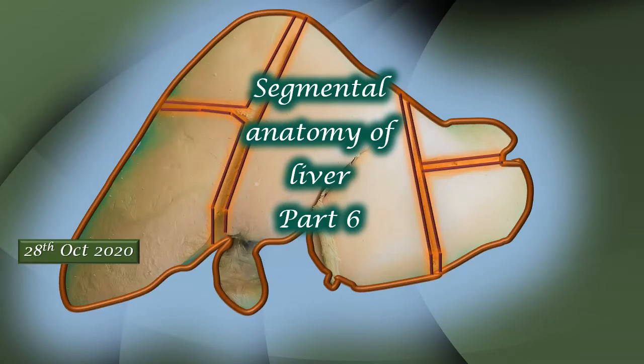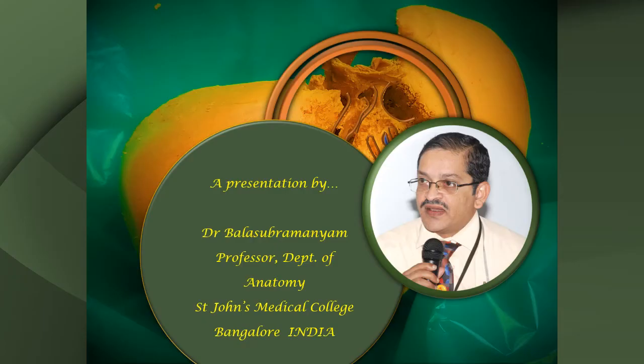Dear friends, welcome to this edition of VBS Anatomia. We are in Part 6 of the series on segmental anatomy of the liver. In this video, we will be covering the four segments of the left physiological lobe of the liver.